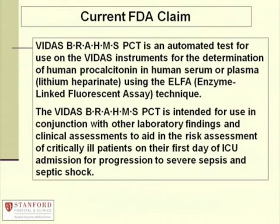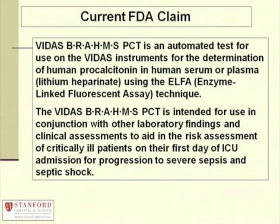It just so happens that this is the current FDA claim, so a lot of thought went into the FDA claim for commercially available PCT assays — the BioMerieux one and others, of which there are several now available. They all have the same claim: intended for use in conjunction with other laboratory findings and clinical assessments to aid in risk assessment of critically ill patients on their first day of ICU admission for progression to severe sepsis and septic shock. When we implement PCT in the laboratory, we should try to convince clinicians to stick to this application, which is where it has the most use at the current time.